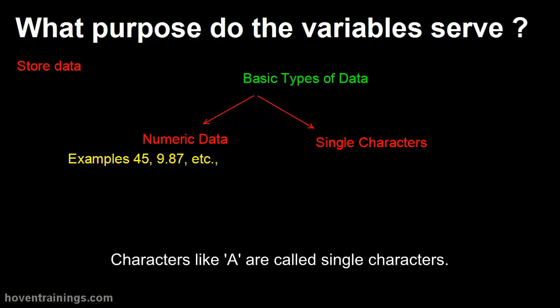Characters like A are called single characters. Such single characters can be stored in variables. Single characters are written inside single quotes.